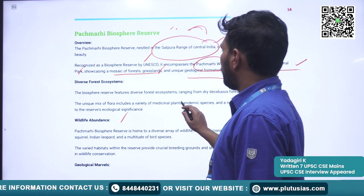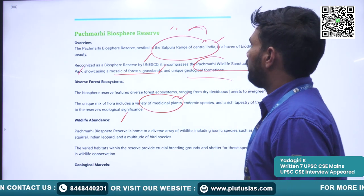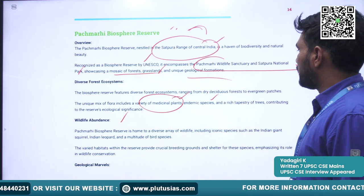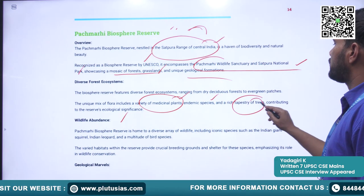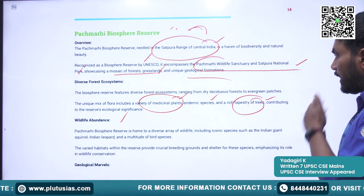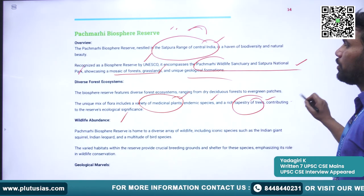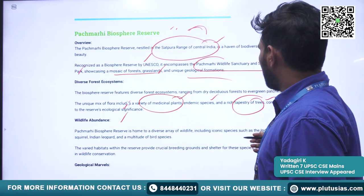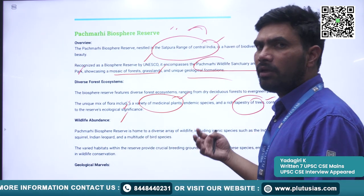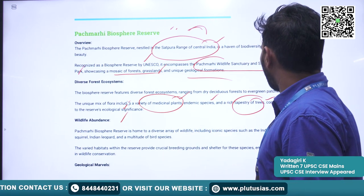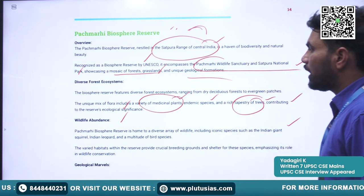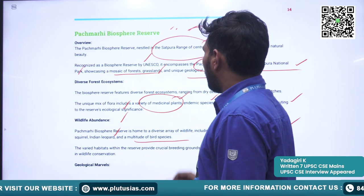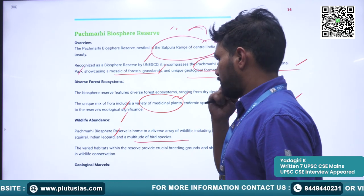When we see the plant biodiversity, it is home to a vast variety of medicinal plants, endemic species, and a rich tapestry of trees contributing to its ecological significance. The faunal species found here include the Indian giant squirrel, Indian leopard, and a multitude of other bird species.